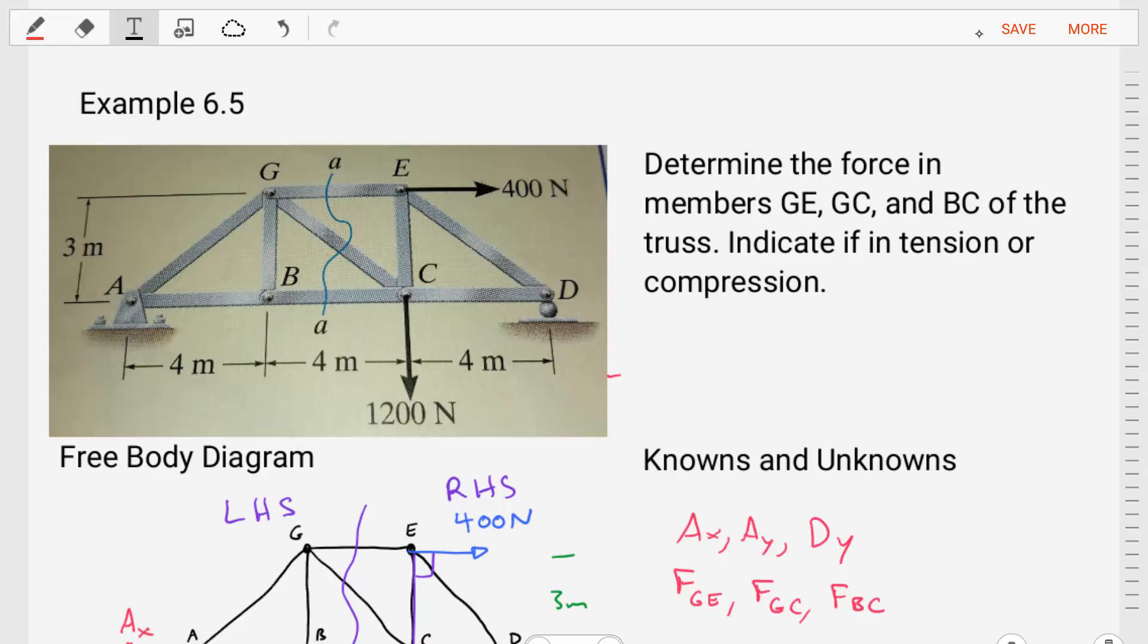This is example 6.5 coming from Hibbler's Statics book. This example asks us to determine the forces in members GE, GC, and BC of the truss that's shown, and we're to indicate if those members are in tension or compression.